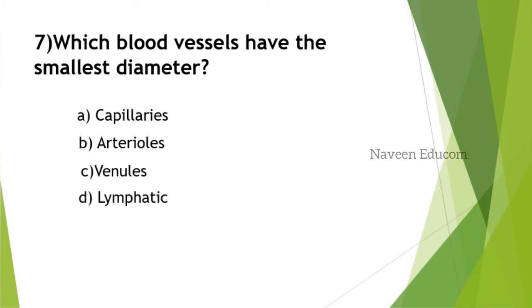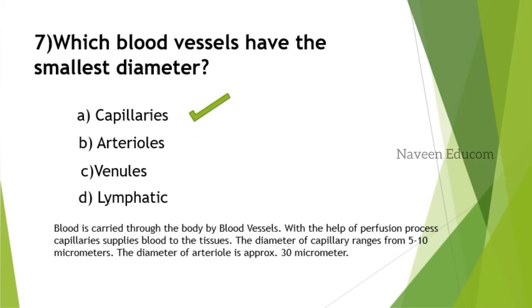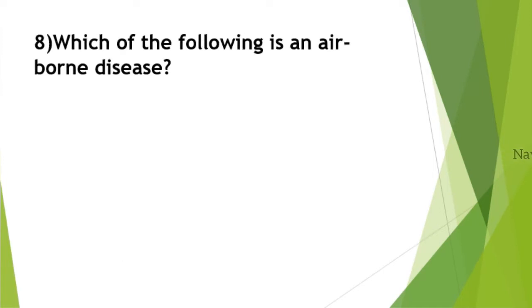Blood is carried through the body by blood vessels. Capillaries supply oxygen to the tissues. The diameter of capillaries ranges from 5 to 10 micrometers, which is very important. The diameter of arterioles is approximately 30 micrometers. Please note this range.